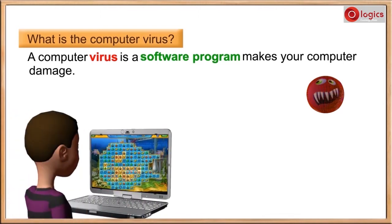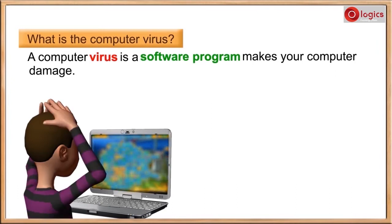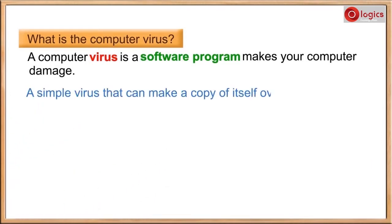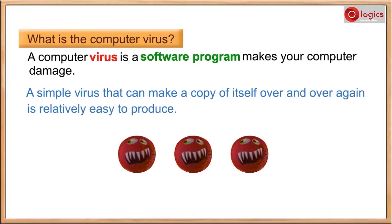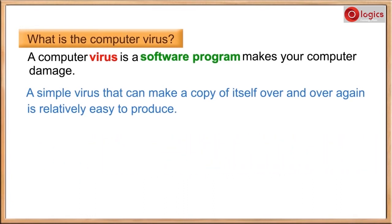This boy is playing a video game. So far, the computer is not affected by a virus, so he is able to play the game very happily. Somehow, the virus reached the computer and slowly spoils the activity. A simple virus that can make a copy of itself over and over again is relatively easy to produce. All computer viruses are man-made.